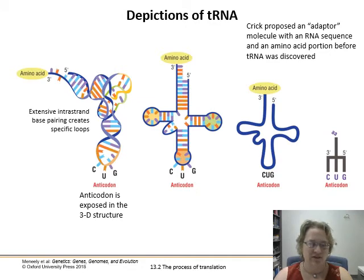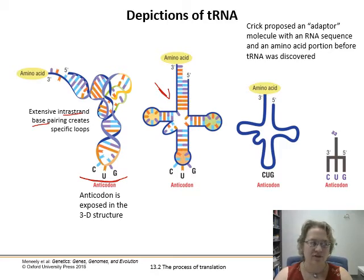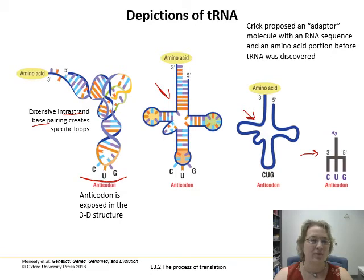So tRNA is depicted in a bunch of different ways. There's a graphical representation with all this interesting intrastrand base pairing making specific loops. Simplified down, we get a three-leaf clover symbol showing all the different base pairing. This is even more simplified, just showing the codon at the base, and our book tends to use this little trident view — not to scale. Interestingly, Francis Crick posed this adapter molecule being made of an RNA sequence before transfer RNA was ever discovered. Good prediction.